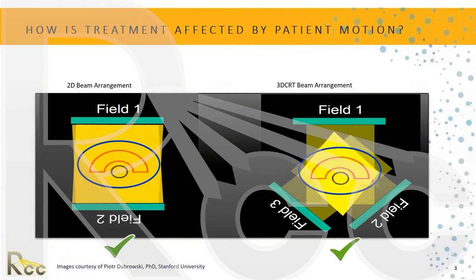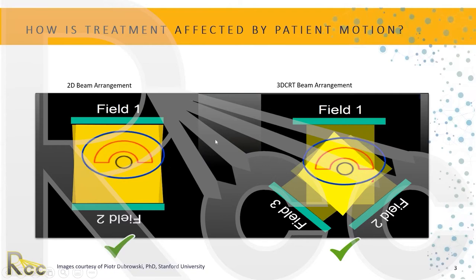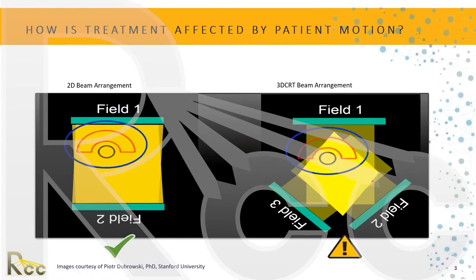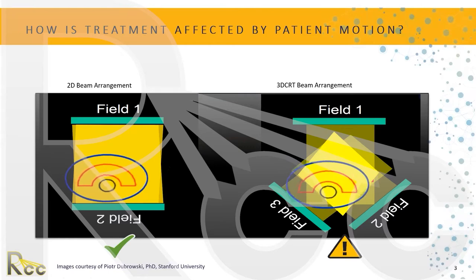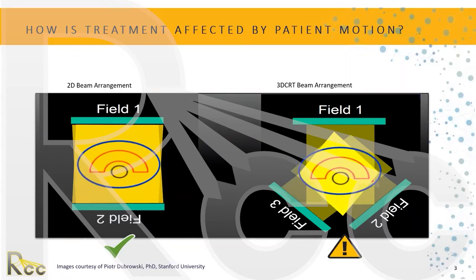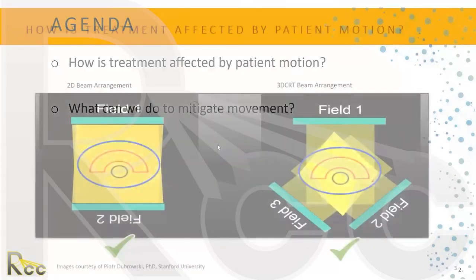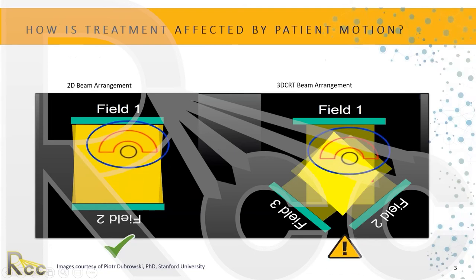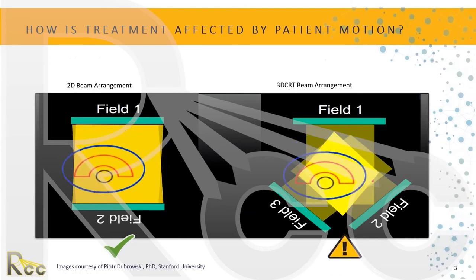If we have a 2D beam arrangement like on the left-hand side, that allows for some variation in positioning. With 3D, it's a little more conformal — meaning the beams are really tight against the tumor volume. So if the patient moves a little bit with a 2D arrangement, we can still hit the target. But with a 3D conformal arrangement, if the patient moves, we're not going to treat what we want to, and sometimes we might even treat things we don't want to — our organs at risk.